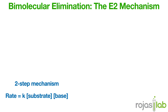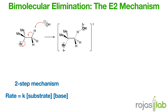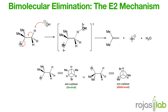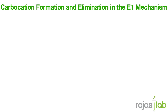Now let's talk about elimination, specifically the E2 mechanism. This is a one-step concerted elimination reaction where the base removes a proton as the leaving group departs simultaneously. It begins with a strong base abstracting a beta hydrogen. From here, the electrons from the C–H bond form a new pi bond, and the leaving group departs simultaneously. Typically, anti-periplanar geometry is required, and it's favored by strong bases and heat.